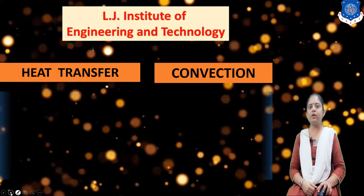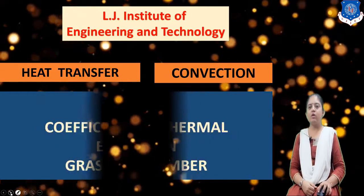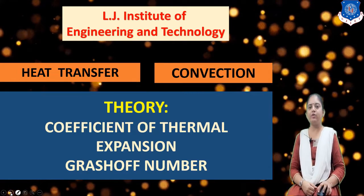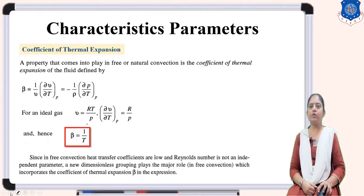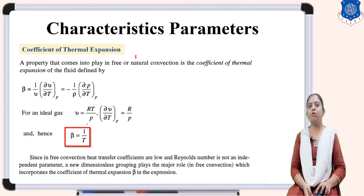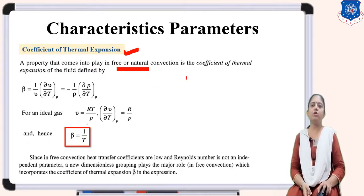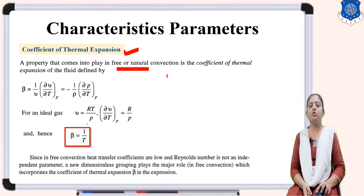First we take the data of coefficient of thermal expansion and Grashof number. What is the coefficient of thermal expansion? These parameters are used in free convection. The coefficient of thermal expansion is a property which comes into play in free or natural convection, and it depends on change of temperature. We denote it by beta.